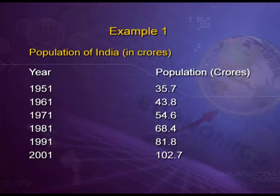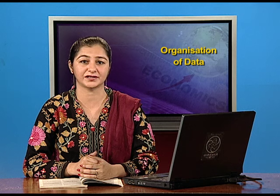This can be explained with an example: the population of India on the basis of certain years. In 1951 it was 35.7 crores, which rose to 68.4 crores in 1981 and 102.7 crores in 2001, simply telling us that population is increasing over certain years. This kind of classification is known as chronological classification — we are classifying data on the basis of years.